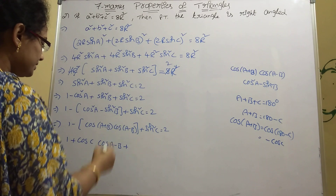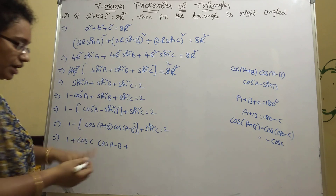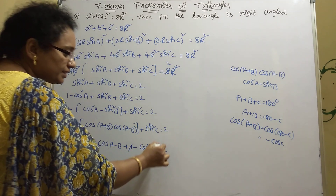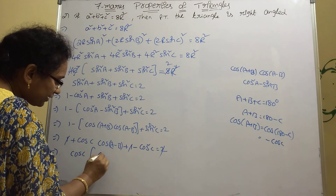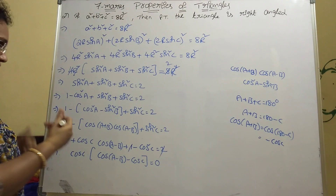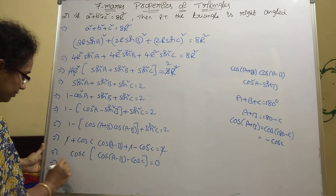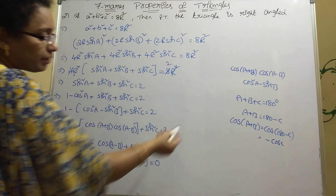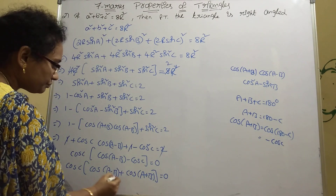Substituting cos(A+B) = −cosC, we get: −(−cosC)·cos(A−B) + sin²C = 2. Converting sin²C = 1 − cos²C, and noting 1 + 1 = 2 which cancels with the right side, we arrive at: cosC·cos(A−B) − cosC = 0. Factor cosC: cosC·[cos(A−B) − cosC] = 0. Now replace cosC = −cos(A+B), giving cosC·[cos(A−B) + cos(A+B)] = 0.